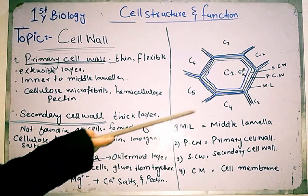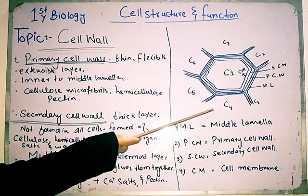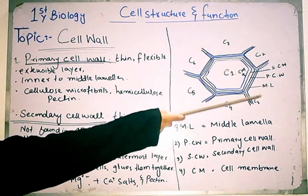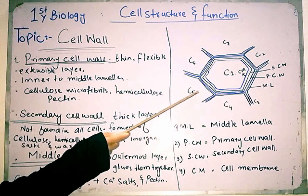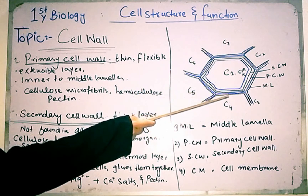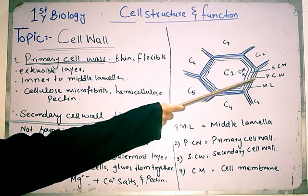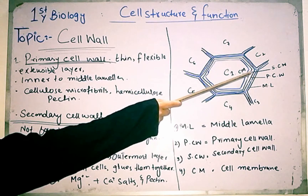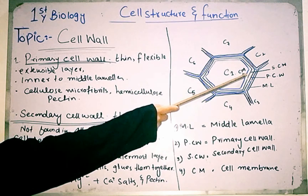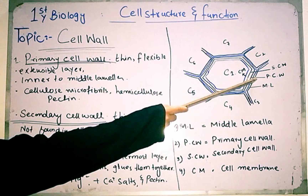If you look at this diagram, you can see different cells — cell 1, cell 2, cell 3, cell 4, cell 5, cell 6, and cell 7. Here you can see the primary cell wall. Then there is the secondary cell wall, then the cell membrane, and the outermost layer is the middle lamella.